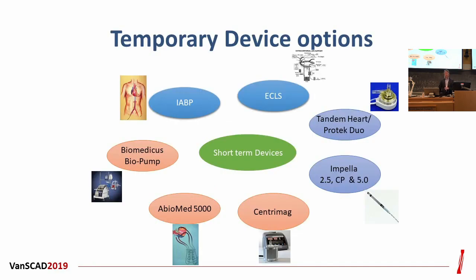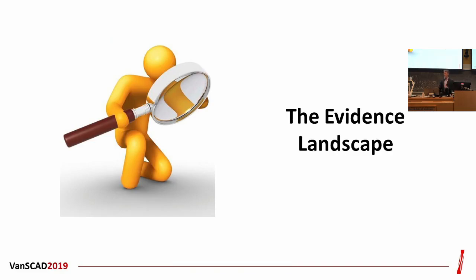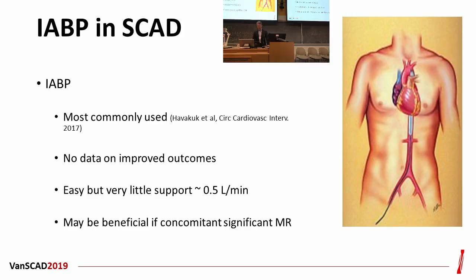We use temporary device options — there are many of them. Some are available in Europe but not in Canada. Out of those, there are a few we can most commonly access in Canada and probably the United States. The simplest and easiest is the intra-aortic balloon pump, which is used even in the literature we discussed. About 28% of patients got mechanical support in one series, and the vast majority of those received a balloon pump.